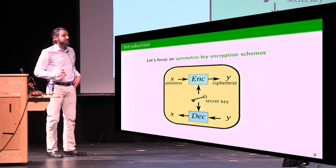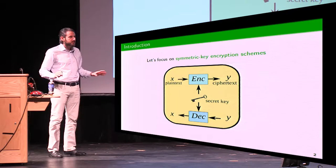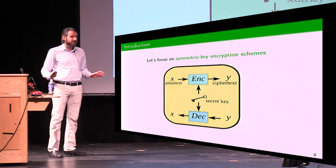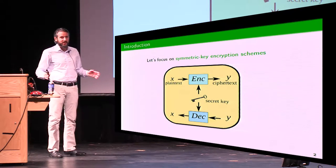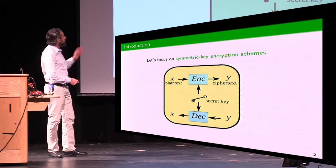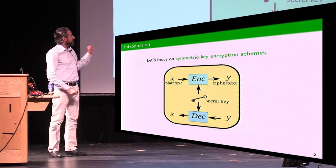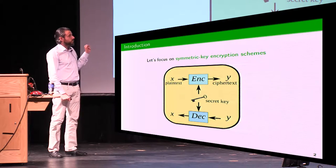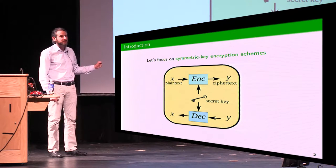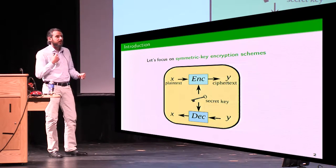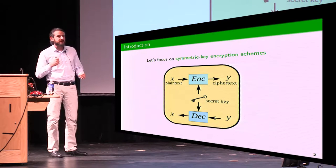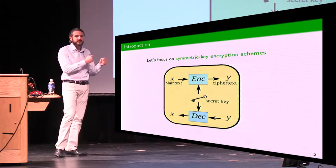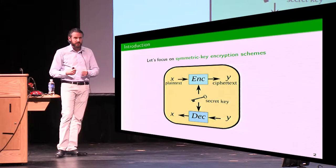There's nothing fancy here. It's one of the simplest cryptographic primitives that you can think of. You just have one secret key, and then you have one encryption procedure and one decryption procedure. Each of them map, respectively, plaintext to ciphertext and ciphertext to plaintext.